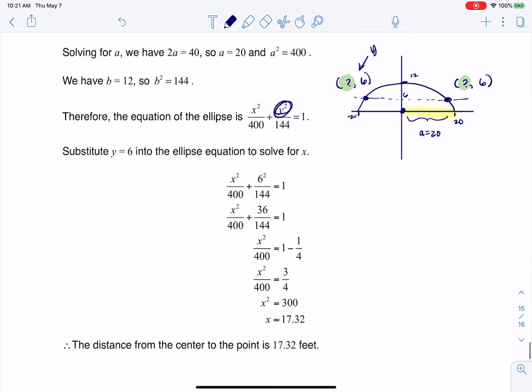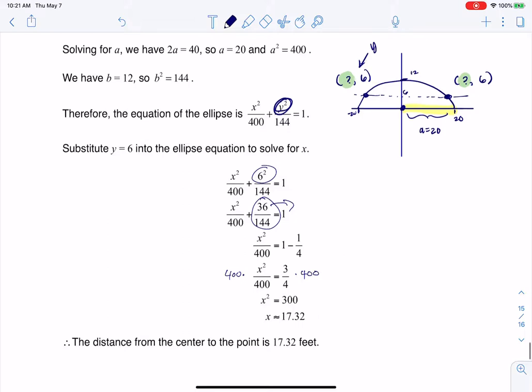So when I plug in y equaling 6 you see I'm putting in 6 squared. I got a nice fraction, I subtract it to the other side, I multiply top and bottom here by 400 to get rid of that fraction. I get x equaling 300. Technically x is plus or minus 17.32 because this is the ordered pair 17.32 comma 6 and this is the ordered pair negative 17.32 comma 6. So from the origin I needed to go 17.32 units left and 17.32 units right.